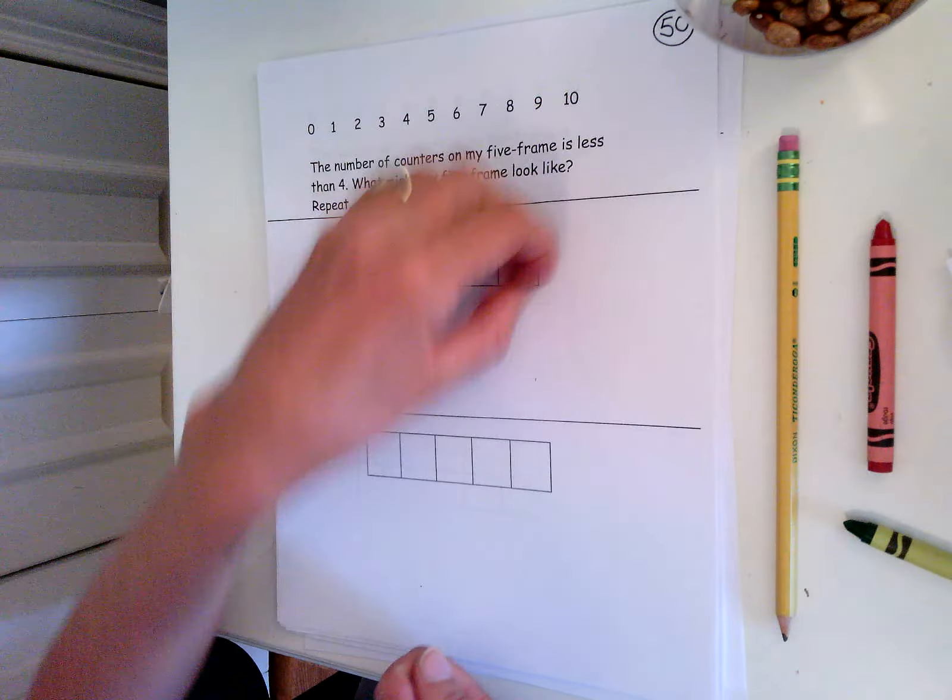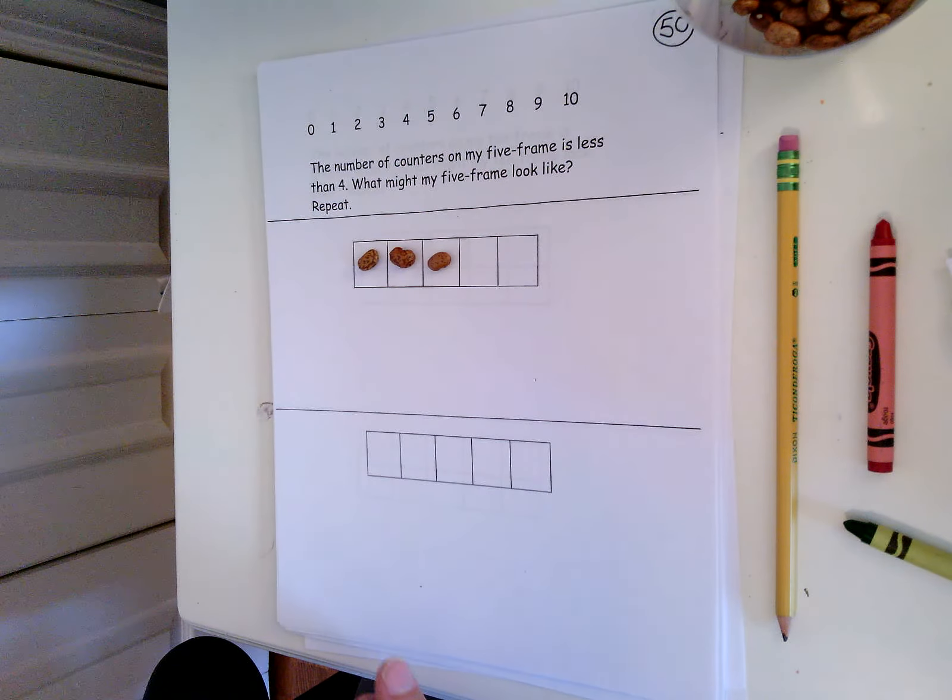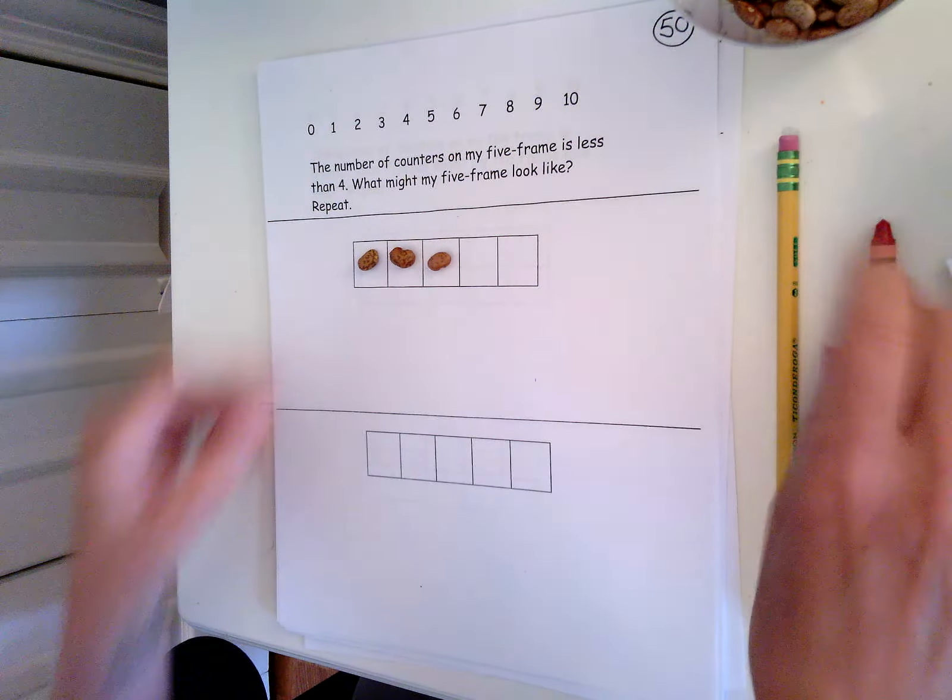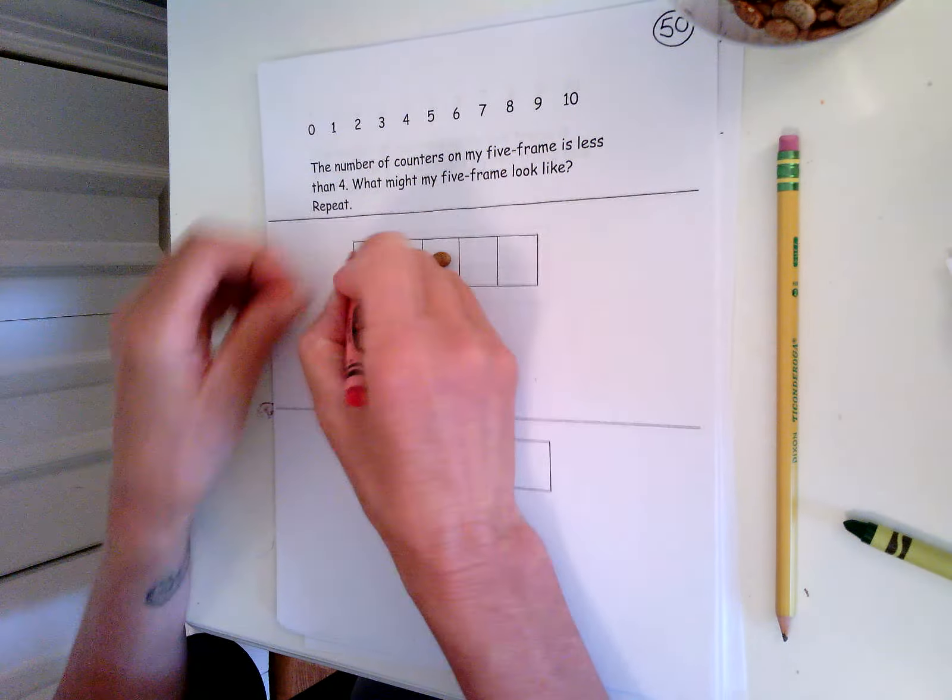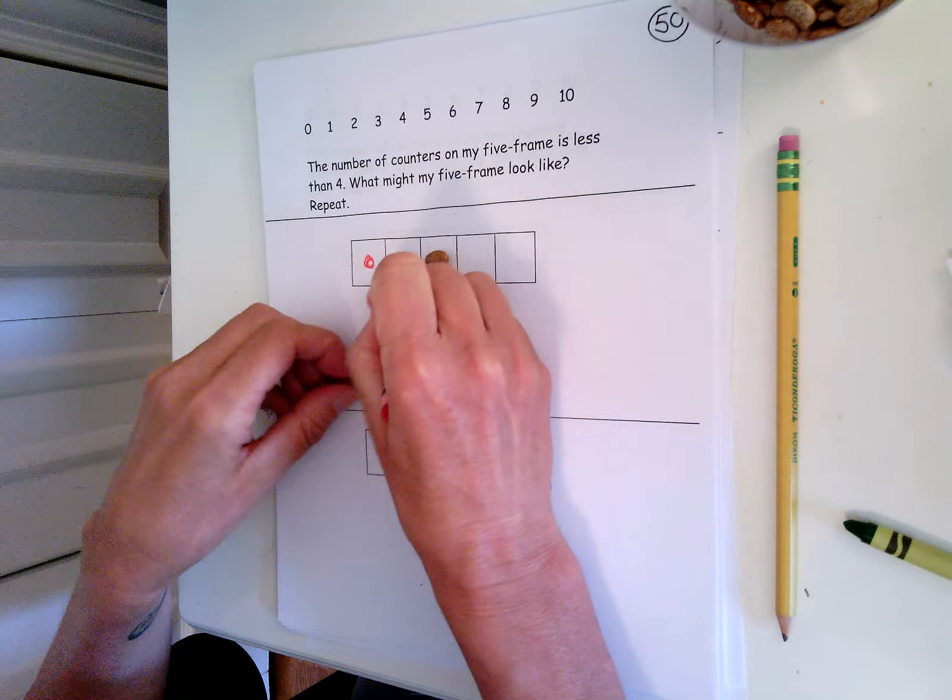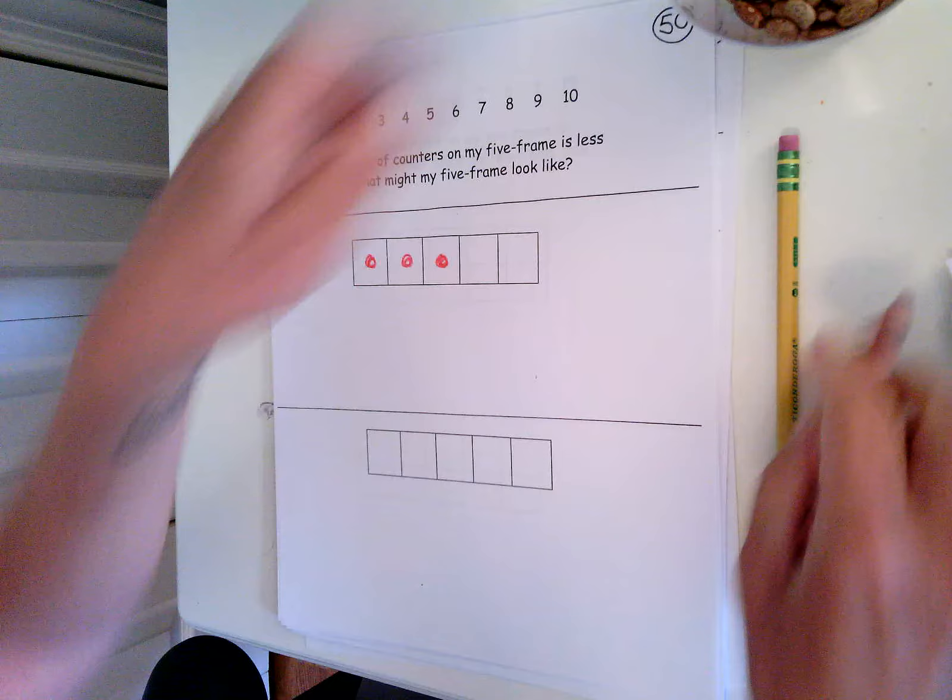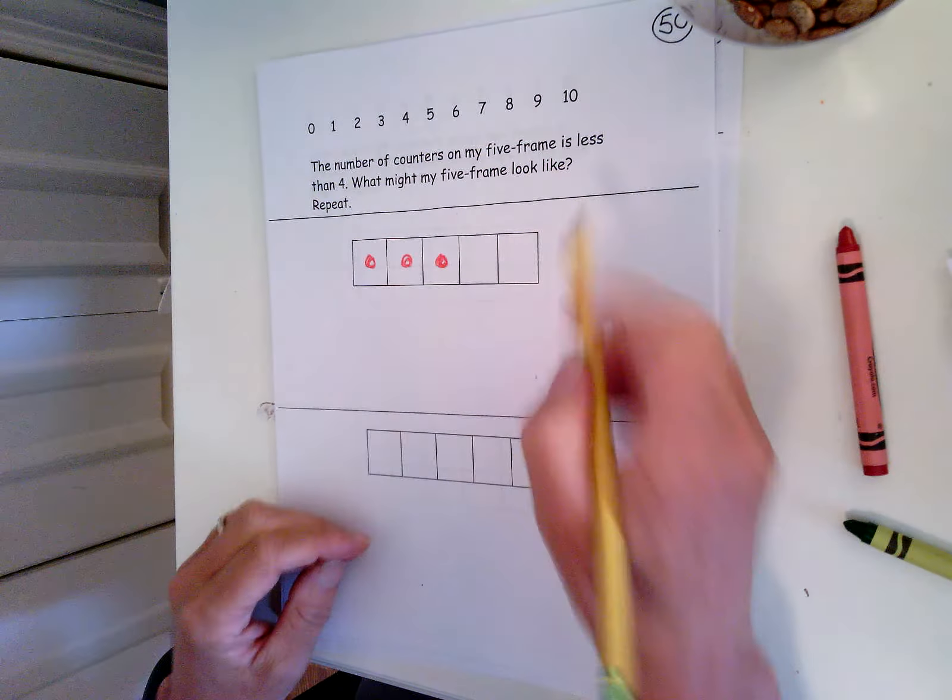Is three less than four? Yes, it is. So three is less than four. I could put one, two, three. And I can write the number three.